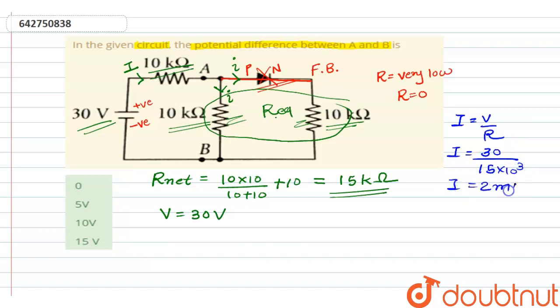Now we have to find potential difference between A and B point. So V-AB will be equal to current into resistance. Current will be this small i which is passing through this branch, and resistance also will be of this branch. So i into R, here i is half of this capital I.